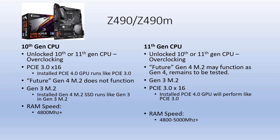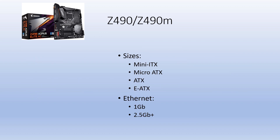With 11th gen on the Z490, you still get unlocked CPU support and overclocking. The Gen 4 M.2 may function as Gen 4 — that remains to be tested and I'm very curious whether that will actually work. Gen 3 M.2s work as normal. RAM speed may be a little higher with 11th gen installed. Form factors are Mini-ITX, Micro-ATX, ATX, and E-ATX, and these boards feature a bit faster Ethernet.